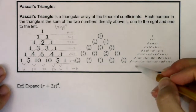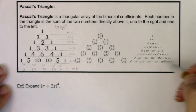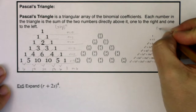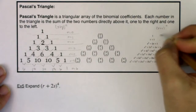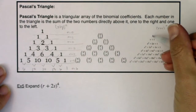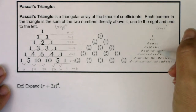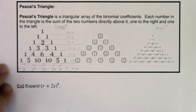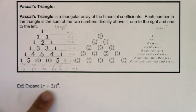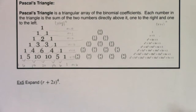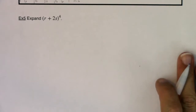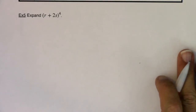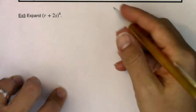This last graphic shows a triangular expansion taking a look at x plus one raised to the nth power — zero, first, squared, cubed, fourth, fifth, sixth, seventh, and so on. We're going to use Pascal's triangle in combination with the binomial theorem to expand a binomial as efficiently as possible. Let's expand r plus 2s to the fourth.